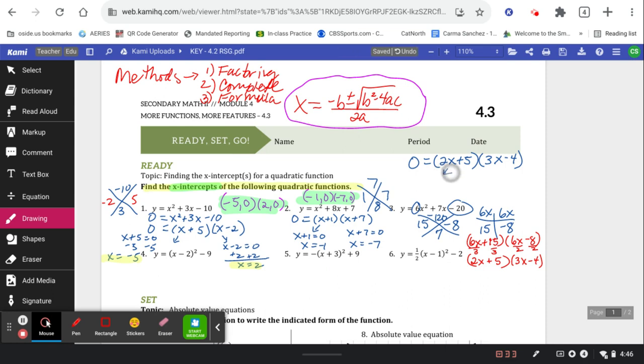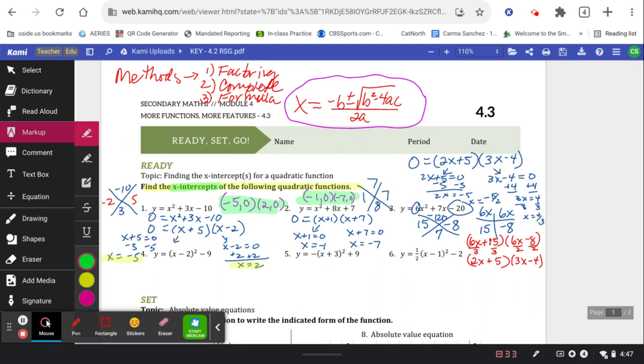So we'd get 0 equals 2x plus 5 and 3x minus 4. Woo! Factorable! What'd you think? Now we set each factor equal to 0 and solve. So we minus 5 and divide by 2. We're going to get our first solution of negative 5 halves. Next one we add 4, divide by 3, and we're going to get a solution of 4 thirds.